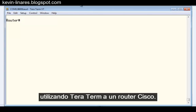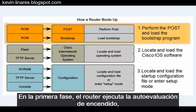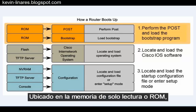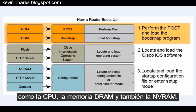There are three major phases. In the first phase, the router runs the Power-On Self Test program. Located in read-only memory, or ROM, the Power-On Self Test checks for errors in the hardware, like the CPU, the DRAM, and also the NVRAM.